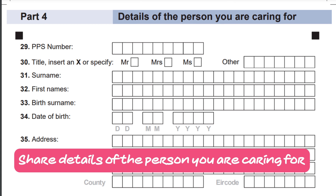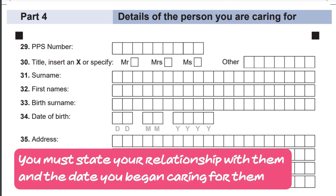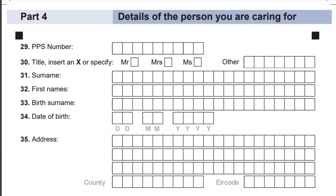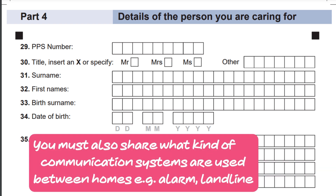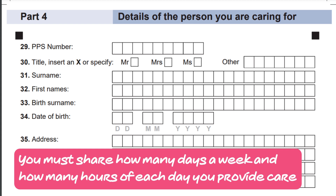Step 4: Share details of the person you are caring for. You must state your relationship with them and the date you began caring for them. If you don't live with the person you care for, you must detail the distance between your homes. You must also share what kind of communication systems are used between homes, such as an alarm or landline.